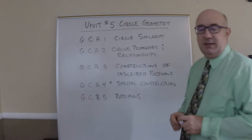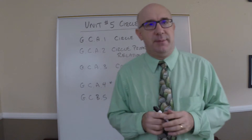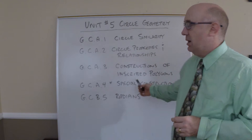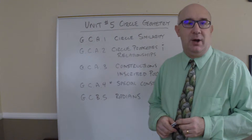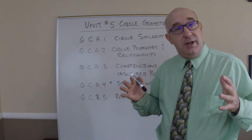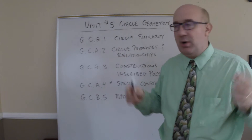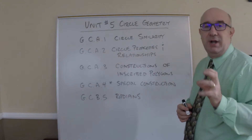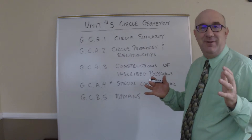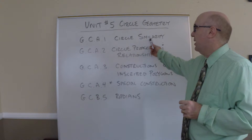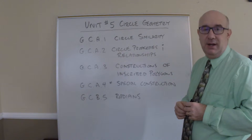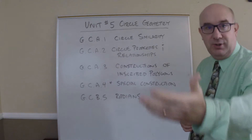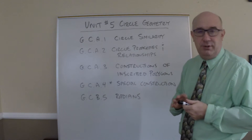The first objective basically establishes that all circles are similar. This is actually an important idea. If you want to talk about radians — how a radian is a constant no matter how big or how small your circle is — there's a proportionality there that holds everything together. This also talks about the idea that you can use similar transformations to map one circle onto another, therefore they're similar.